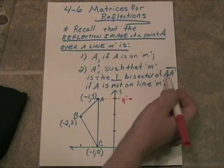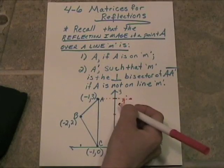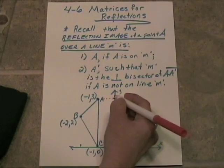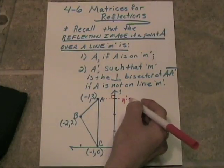And this segment A, A prime, has got to be perpendicular to the Y axis. So that's got to be a right angle. So we have to have point A prime right here.